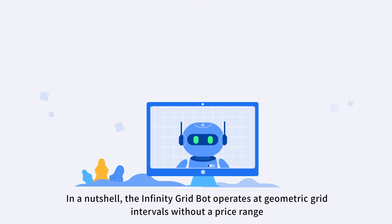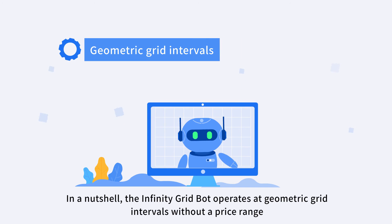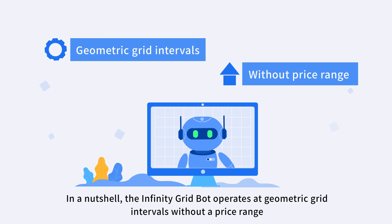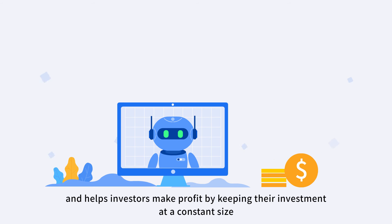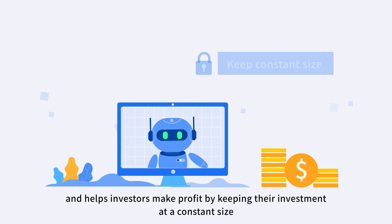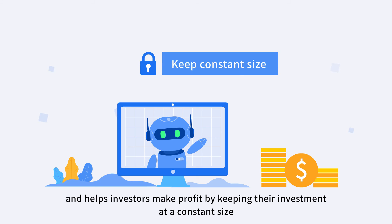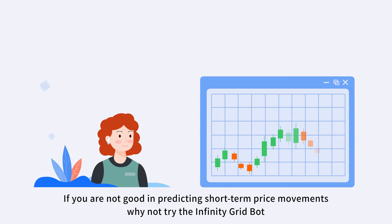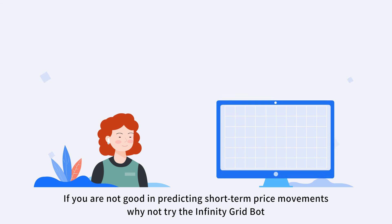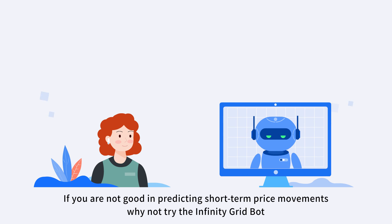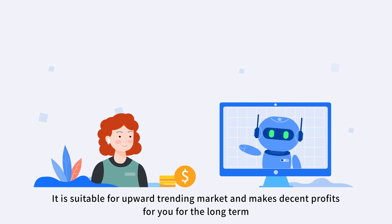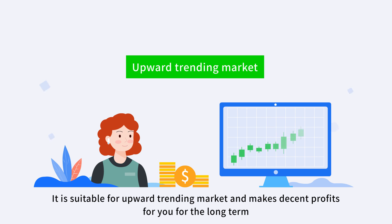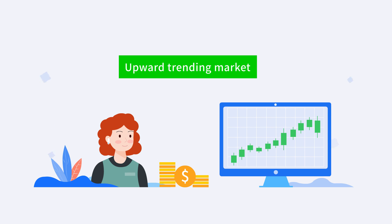In a nutshell, the Infinity Grid Bot operates at geometric grid intervals without a price range, and helps investors make profit by keeping their investment at a constant size. If you are not good at predicting short-term price movements, why not try the Infinity Grid Bot? It is suitable for upward trending markets and makes decent profits for you for the long term.